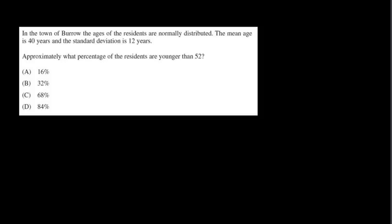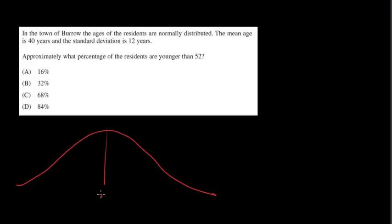I'll show you the way that I would do this. First question reads: in the town of Borough, the ages of the residents are normally distributed. Straight away, that means we've got this little table here — that's my mean. The mean age is 40, so I'm going to put 40 there. The standard deviation is 12 years. So that means one standard deviation would be 52.